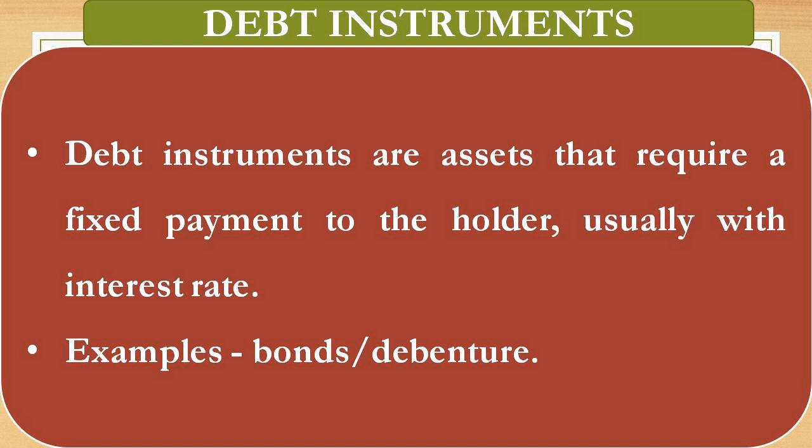These instruments are known as creditorship instruments. The company takes money as a loan from the public. The company is the debtor, and the person who pays money to the company is the creditor. For example, if I borrow money from SBI, I am the debtor and SBI is the creditor. So when a company issues debt instruments, the company is the debtor and the investor is the creditor.